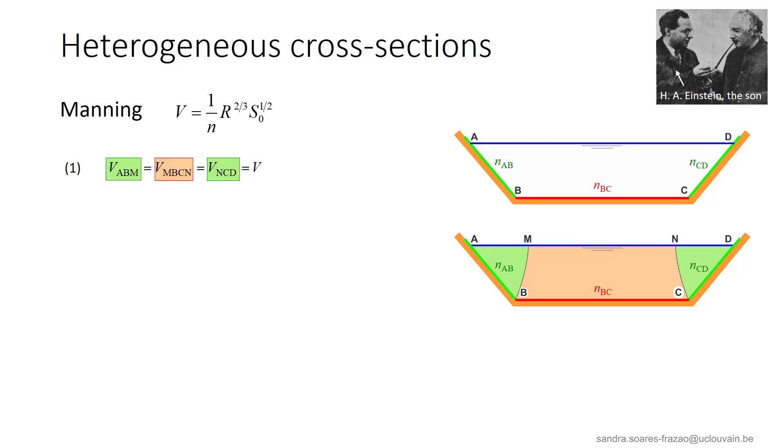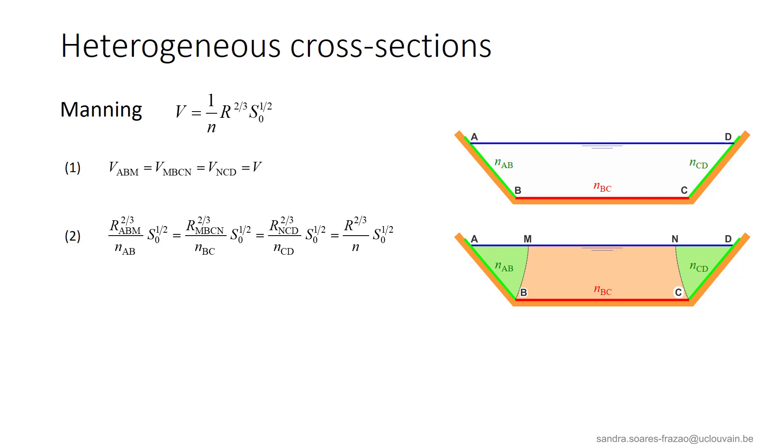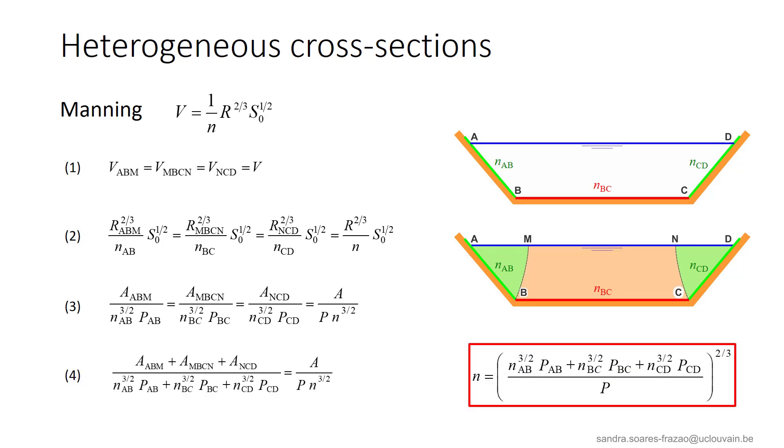Indeed, according to the assumption by Hans Albert Einstein, the velocities in each subsection are equal, and equal to the cross-section average velocity v. Using the Manning equation for each subsection, equation 1 can be rewritten like this. We can develop the hydraulic radius as the ratio between A and P, eliminate S0, and elevate all the equations at the power 2/3rd in order to obtain equation 3. The ratios expressed in the three first terms of equation 3 can be added, because the sum of the subsections on the numerators yields the total cross-section A.